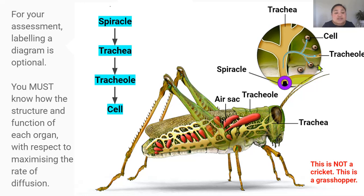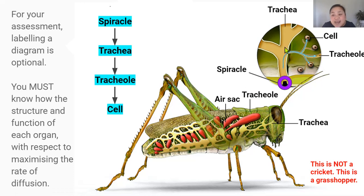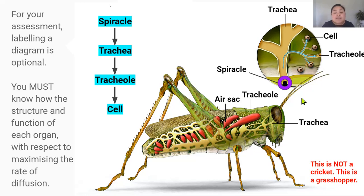The very tips of these tracheoles are the specialized respiratory surface of the tracheal system. This is where gas exchange occurs directly between inhaled air and the body cells. The tracheal system is different from the lung system and the gill system because it takes oxygen directly into the tissues of the body, such as muscle tissues. Unlike mammals and fish, insects do not have a closed circulatory system that pumps oxygenated blood around the body. Instead they have an open circulatory system, but this open circulatory system has no role in gas exchange and transporting oxygen and carbon dioxide.